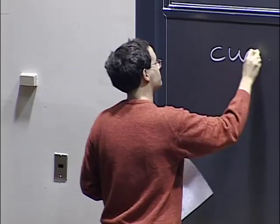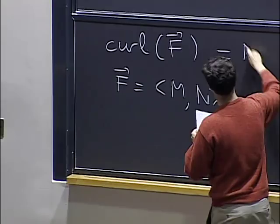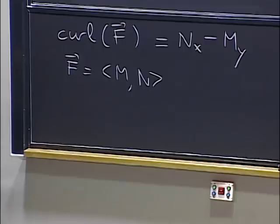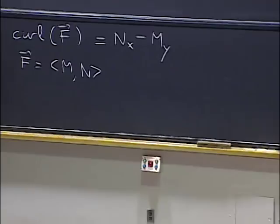So last time, we've seen the curl of a vector field with components m and n. We defined that to be n_x minus m_y. And we said this measures how far that vector field is from being conservative. If the curl is zero and if the field is defined everywhere, then it's going to be conservative. And so when I take a line integral along a closed curve, I know it's going to be zero.